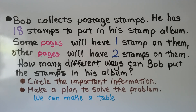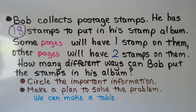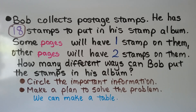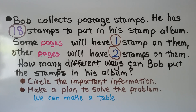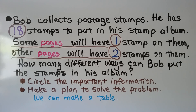Bob collects postage stamps. He has 18 stamps to put in his stamp album. Some pages will have one stamp on them. Other pages will have two stamps on them. How many different ways can Bob put the stamps in his album? The first thing we're going to do is circle the important information. We can make a plan to solve the problem — we can make a table of all the data.